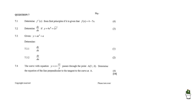In today's video, we're going to be looking at question 7 from November 2019. The first question says that we need to determine f prime of x from first principles, given that f of x is equal to 4 minus 7x.